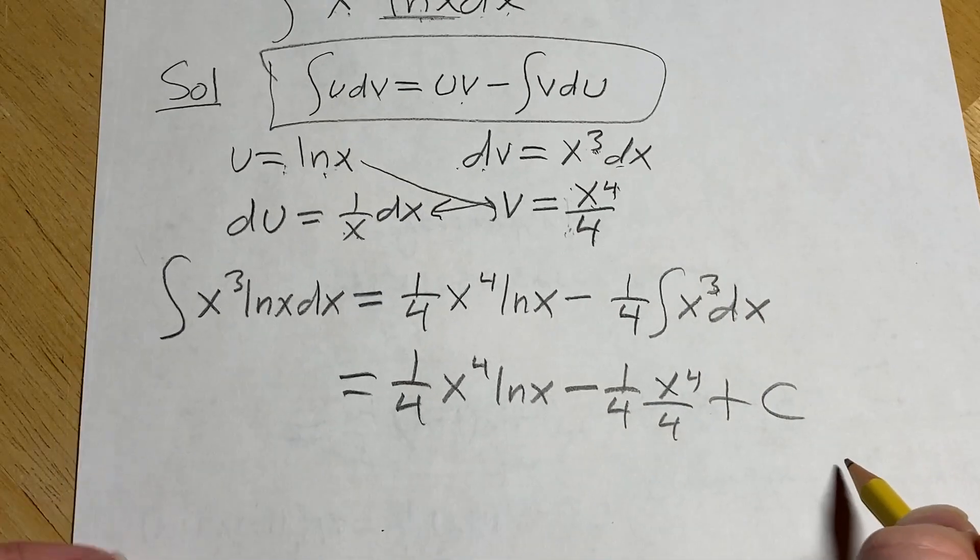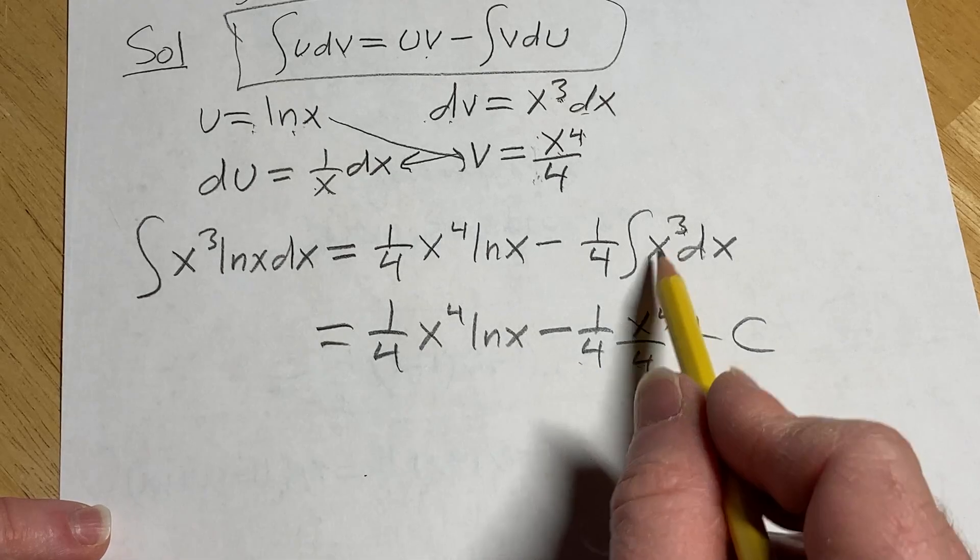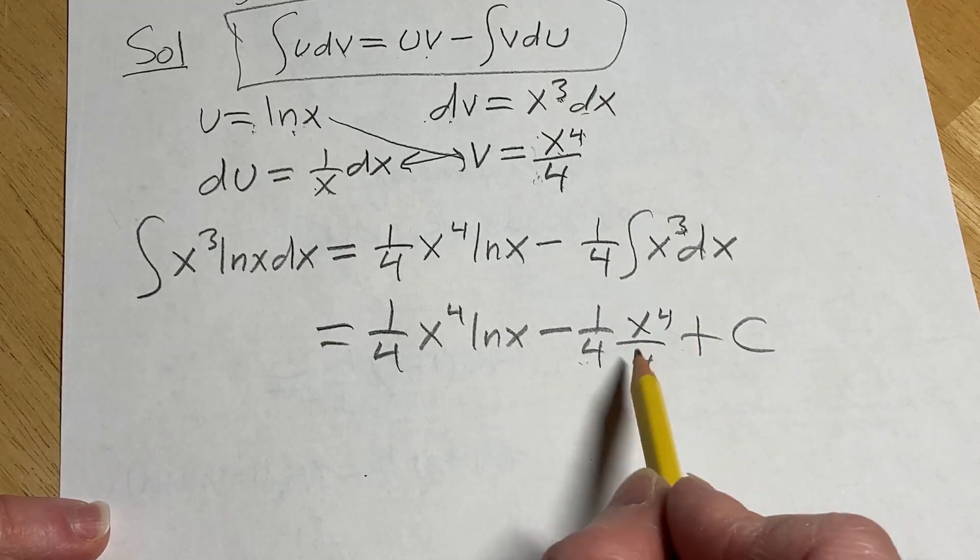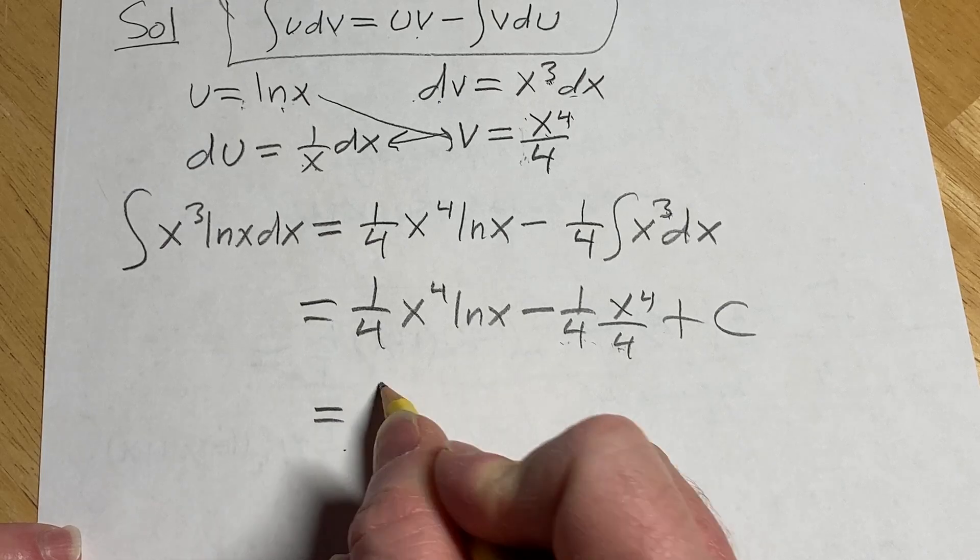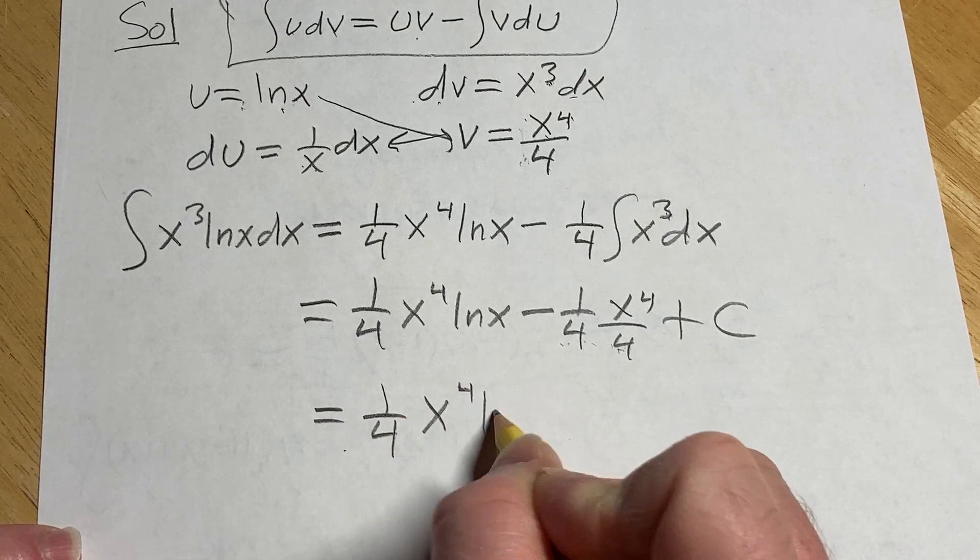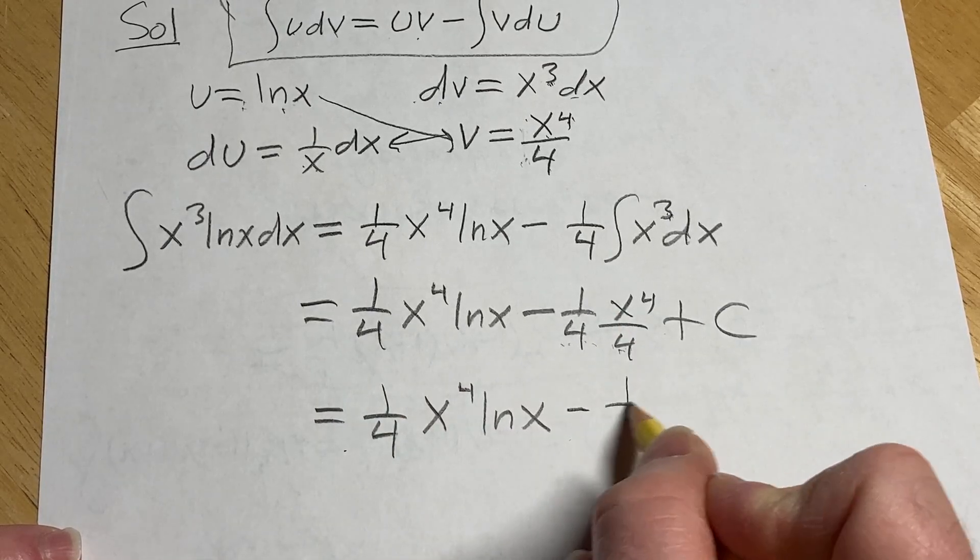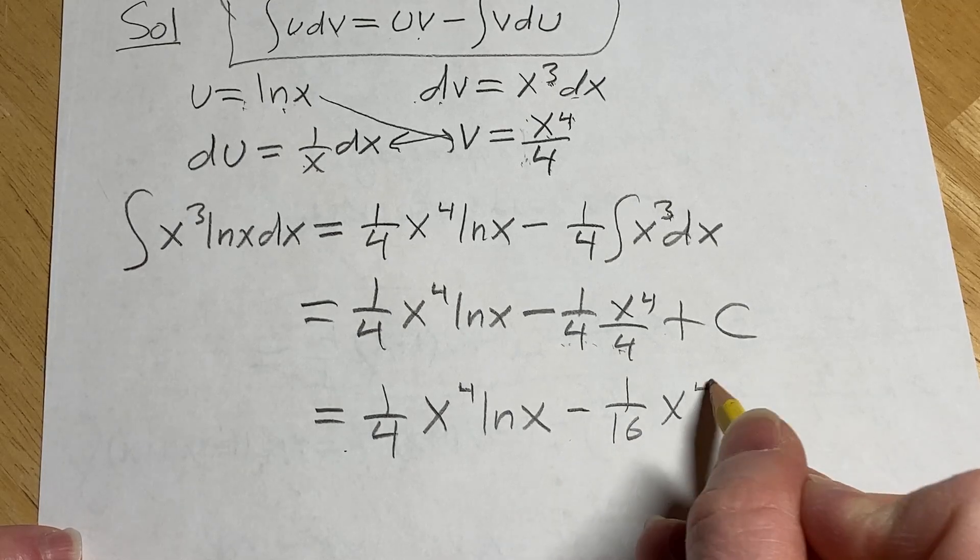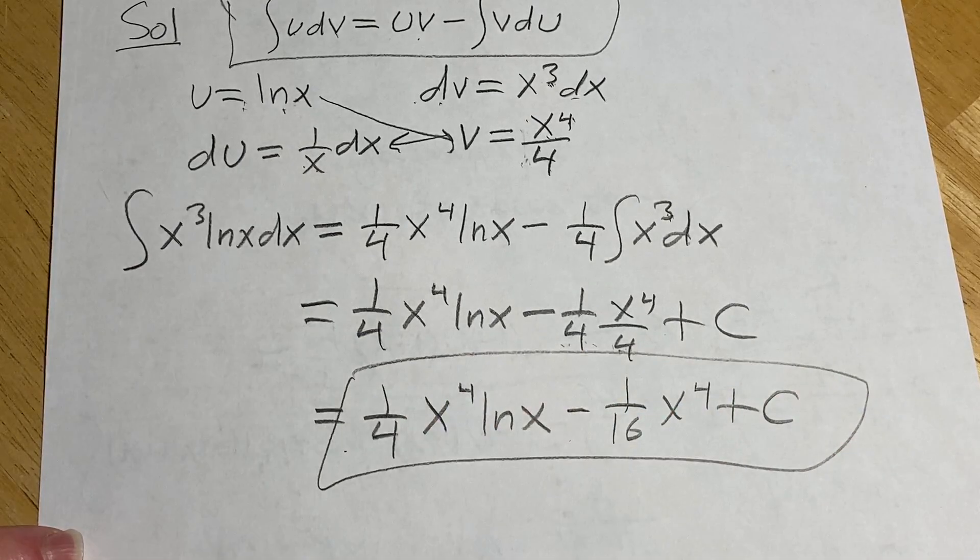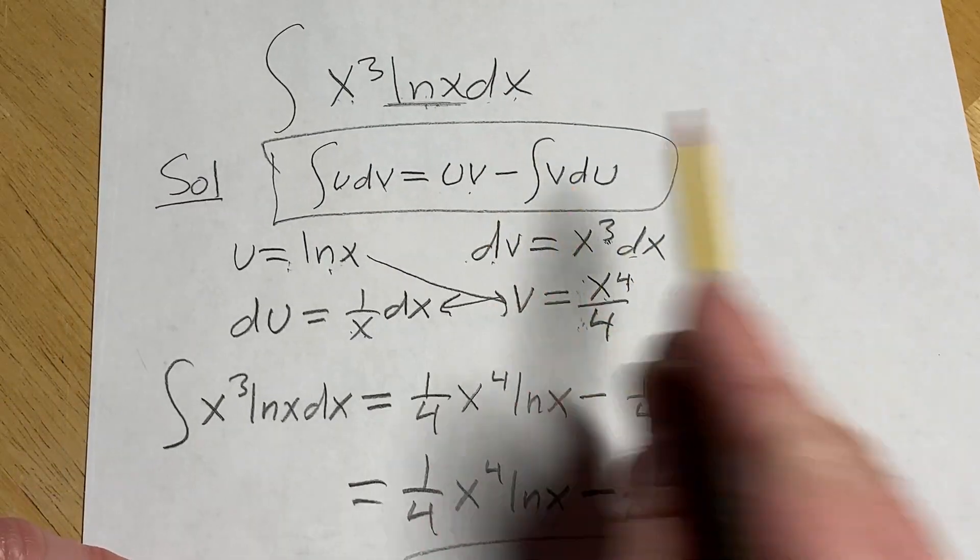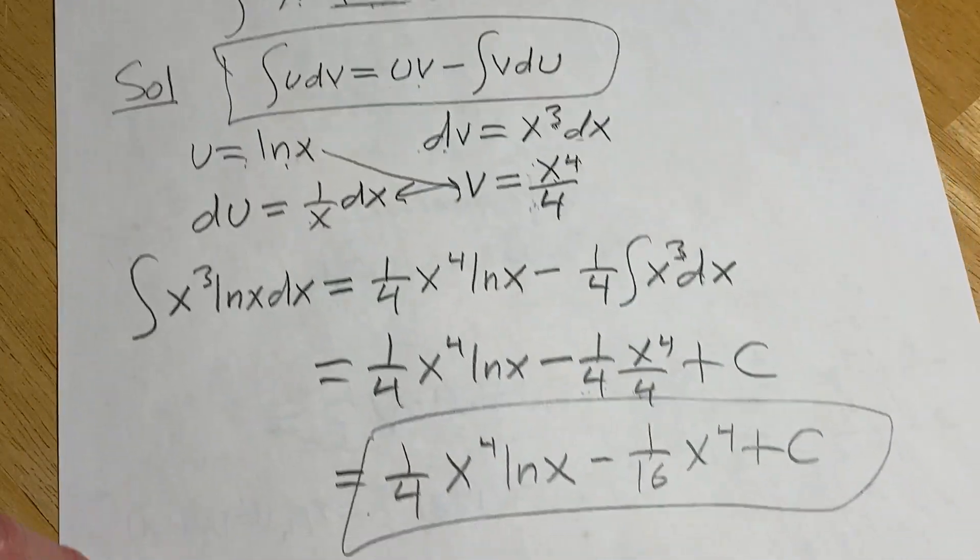Plus our constant of integration and normally I would skip this step and just do the multiplication and you can skip steps just be careful 4 times 4 is 16 so this is equal to 1 4th x to the 4th lnx minus 1 over 16 x to the 4th plus c and that would be the final answer to this problem that's the integral of x cubed lnx with respect to x.